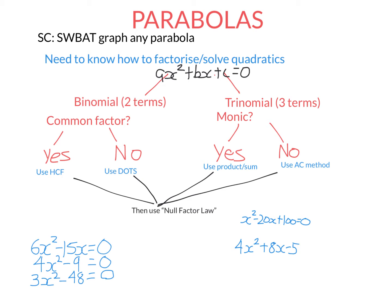Whichever method of factorisation you use, you then use the null factor law to solve it. So let's look at some examples. Let's say I have 6x-squared minus 15x equals zero. This is a binomial because it has two terms. First we ask ourselves: is there a common factor? Do these two terms share a common factor?